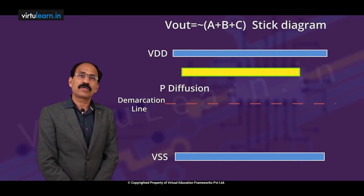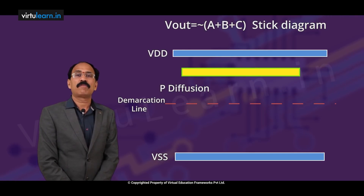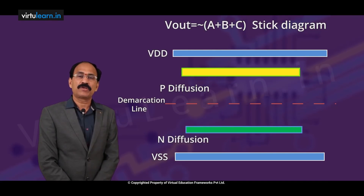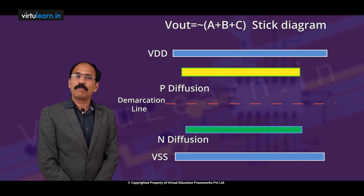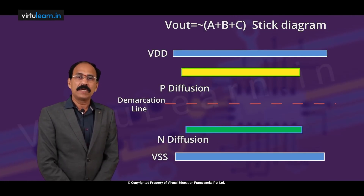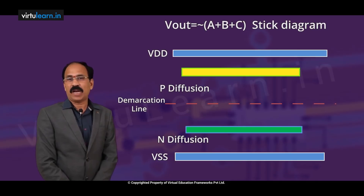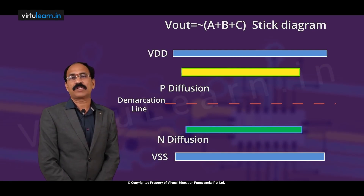P diffusion should not cross the demarcation line from top down. Similarly, N-plus diffusion should not cross from below the demarcation line. This is the rule. Polysilicon and metal can cross the demarcation line. Only P diffusion and N diffusion should not cross the demarcation line.